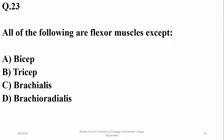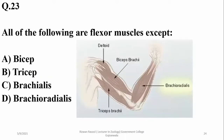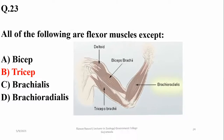All of the following are flexor muscles except the triceps, because triceps are extensor muscles, while biceps, brachialis, and brachioradialis in the list are responsible for muscle contraction or flexion.